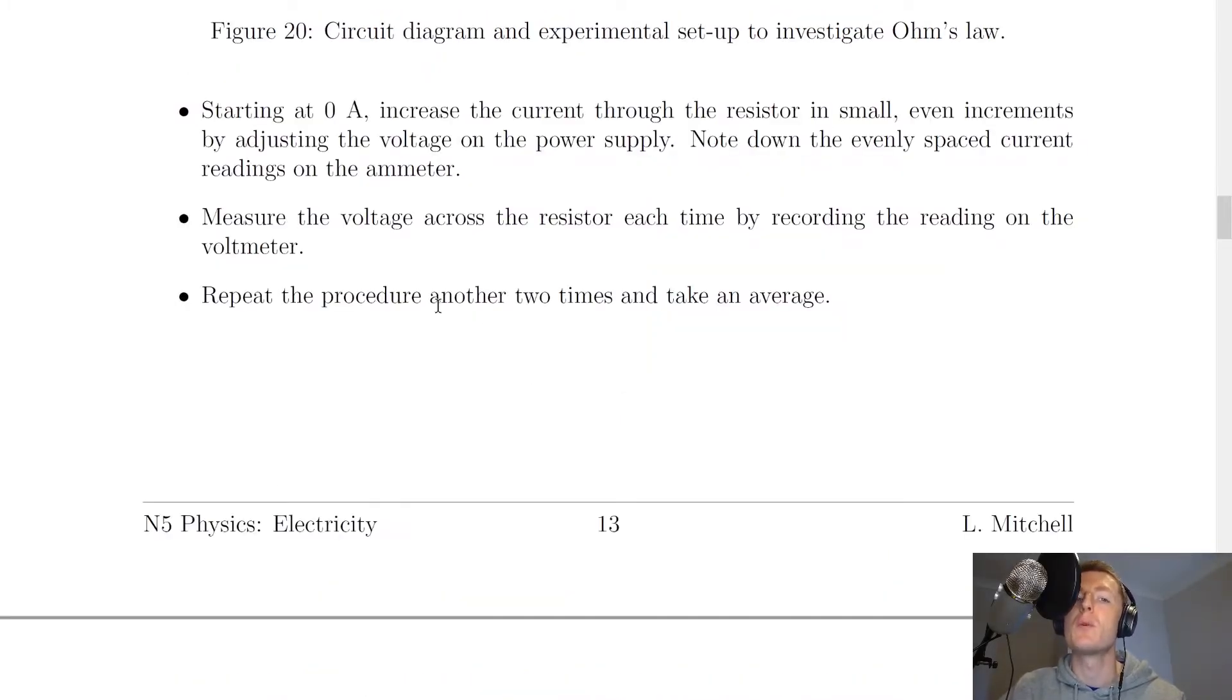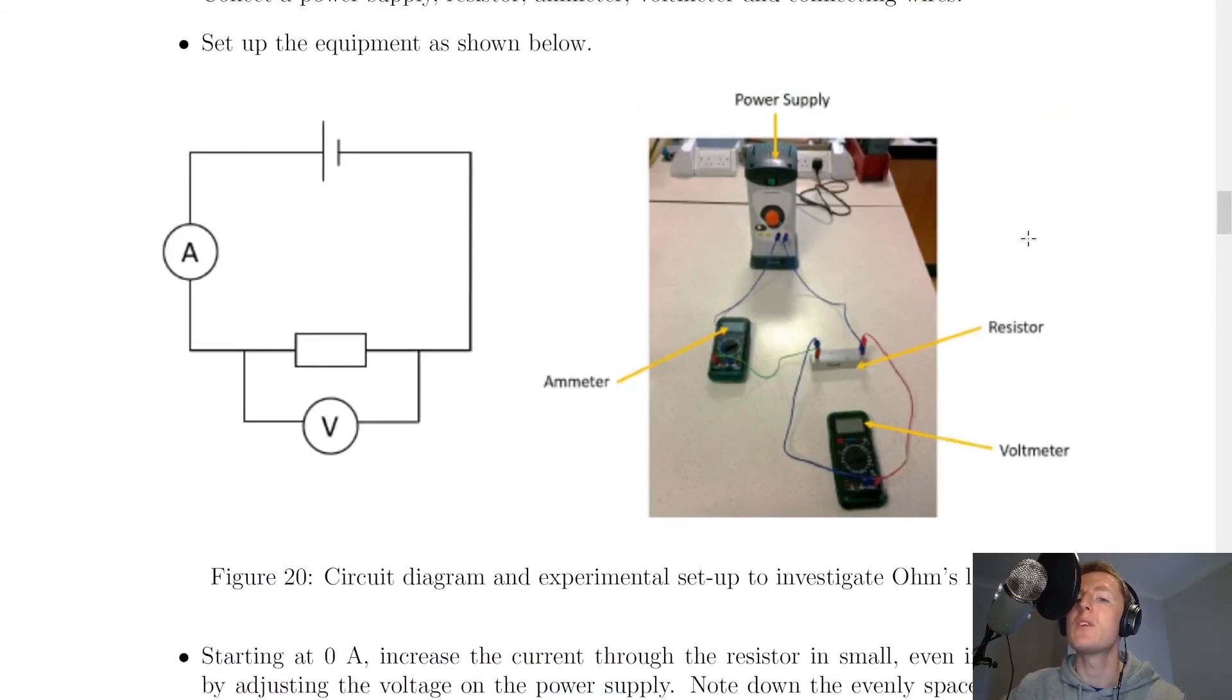Here's some brief steps for the method of what you would actually do. So starting at zero amps, you would increase the current through the resistor in small, even increments by adjusting the voltage on the power supply. You would then note down the evenly spaced current readings on the ammeter. So you would come up with set values of current that you would want to set the current reading to. And we are saying that you can change the reading on the ammeter, i.e. the current in the circuit, by adjusting the dial on the power supply. So that would be this orange dial here.